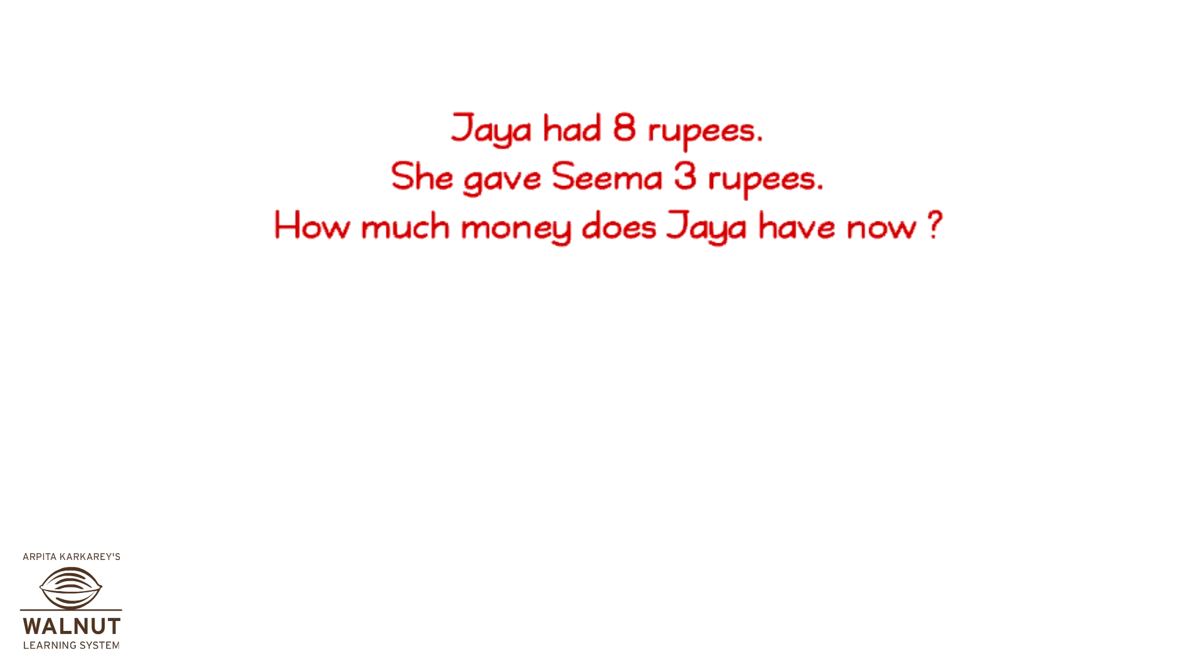Jaya had 8 rupees. She gave Seema 3 rupees. How much money does Jaya have now? That means 8 minus 3 is equal to? The answer is 5 rupees.